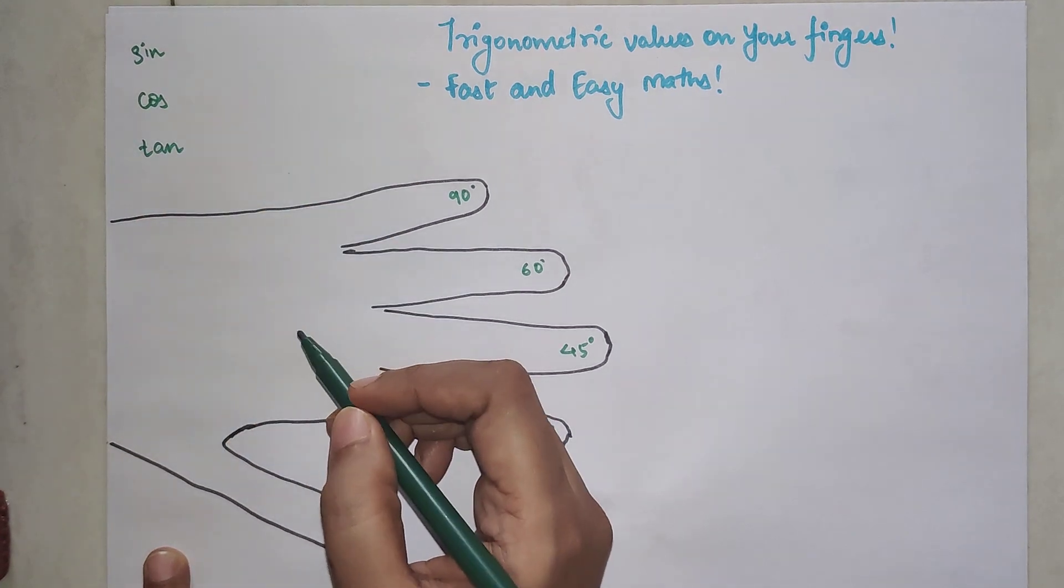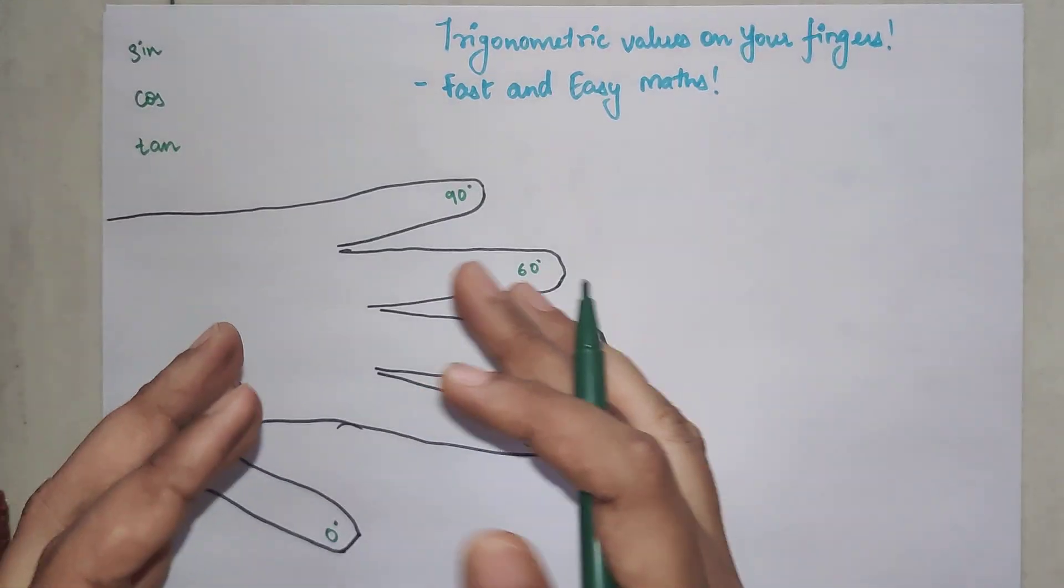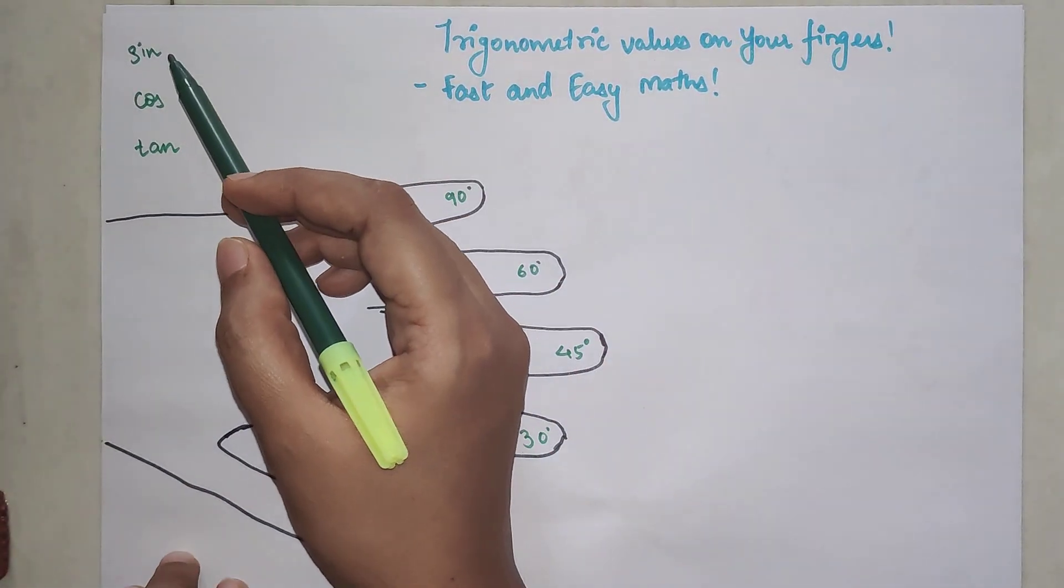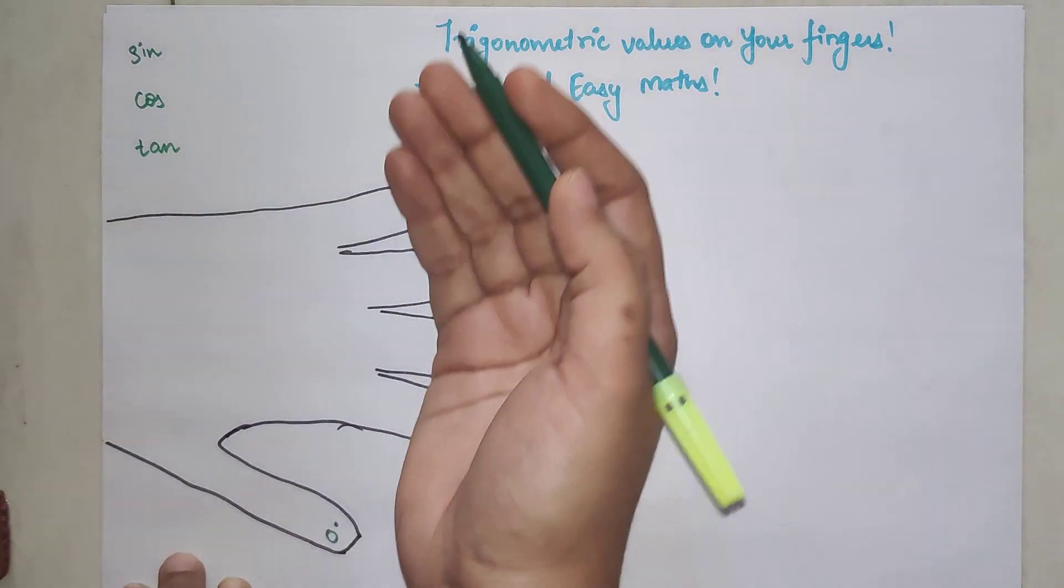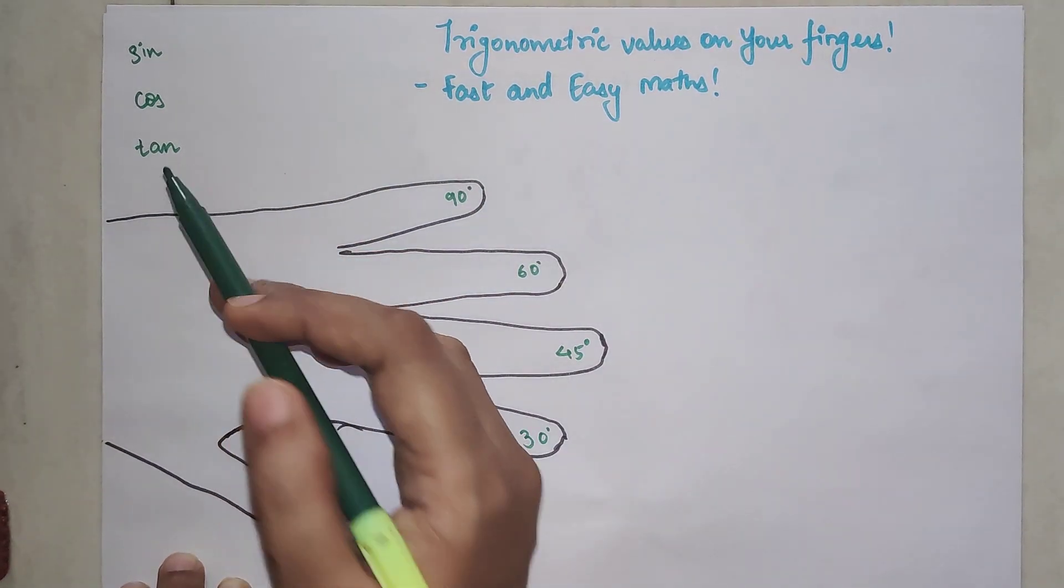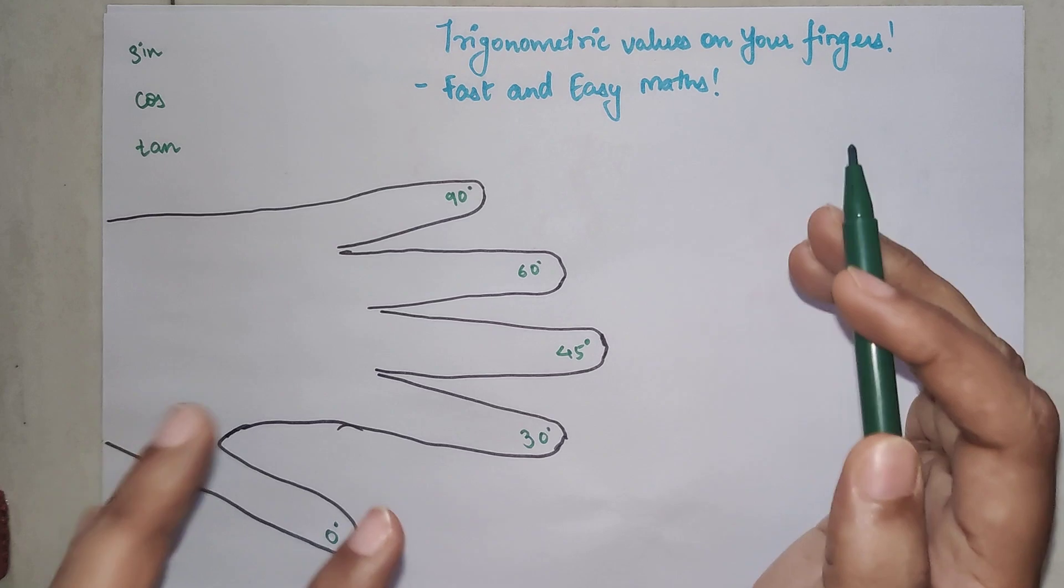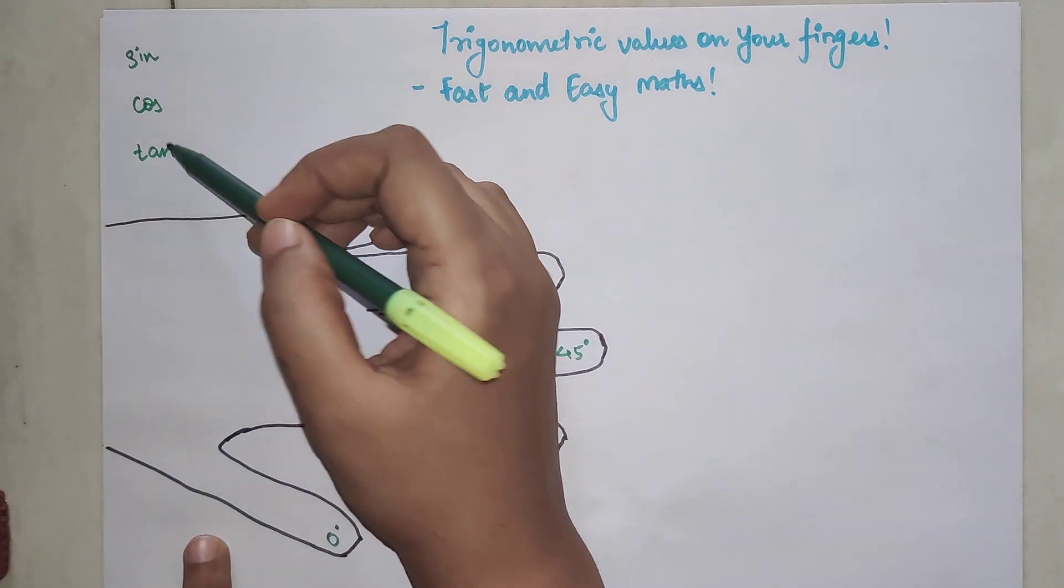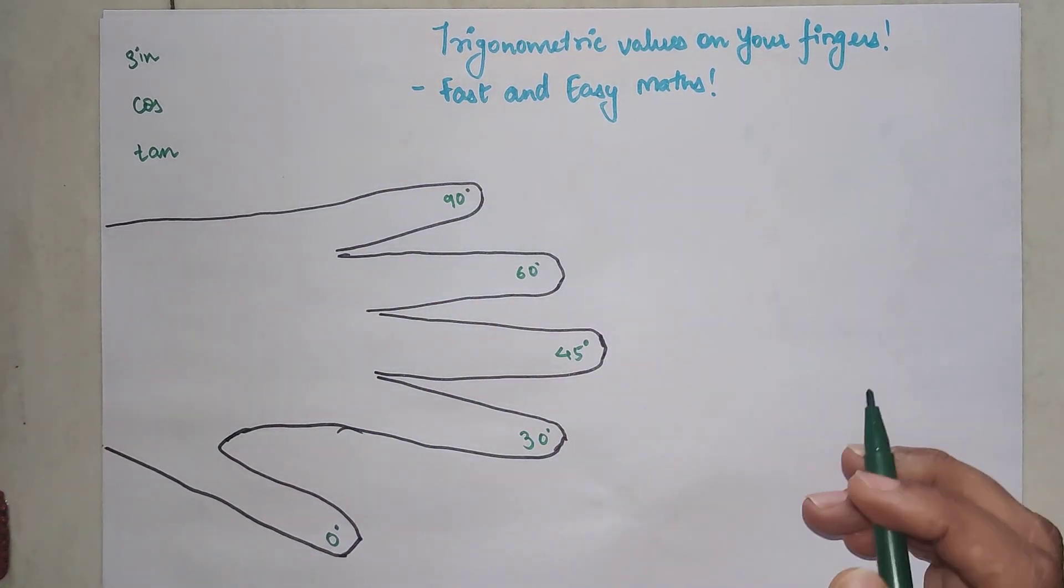All these three things are very important. I hope you understand that if you found sin then you can find cosec. If you have found cos then you can find sec and if you have found tan then you can find cot as well. So we are just going to focus on these three primary trigonometric ratios.